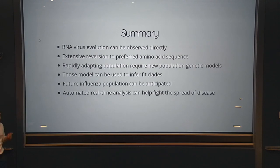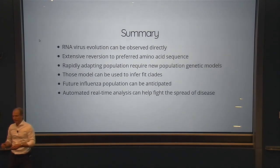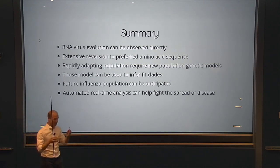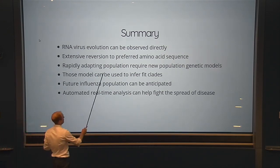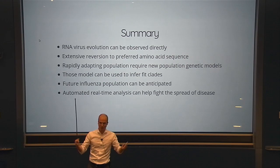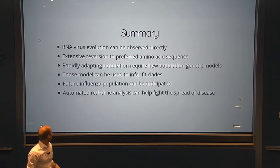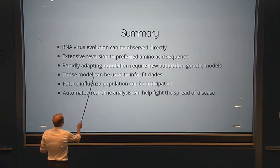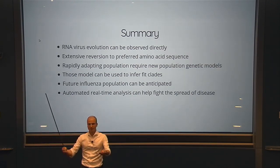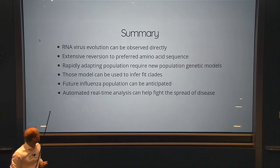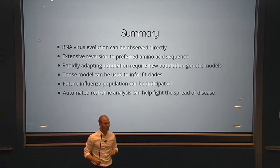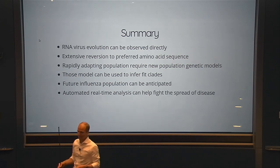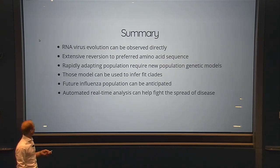I hope I've given you some sense that virus evolution is something you can observe happening from month to month, year to year. At least in HIV, there seems to be a preferred amino acid sequence to which the virus always tends to return. There's a theoretical model of rapidly adapting populations with quite immediate practical implications for predicting future influenza strains. Nextstrain is an open webpage for real-time analysis — feel free to use it.